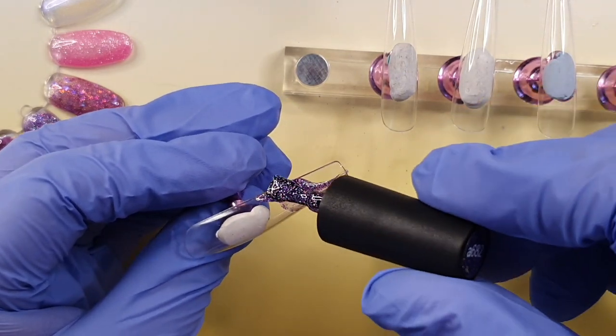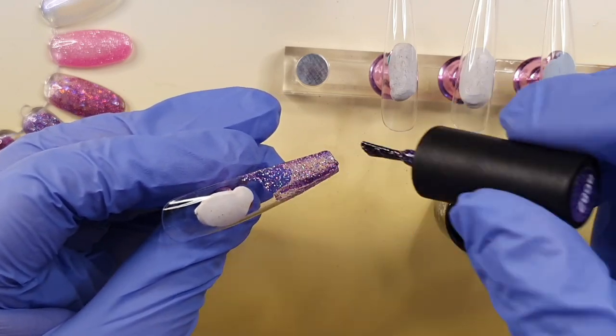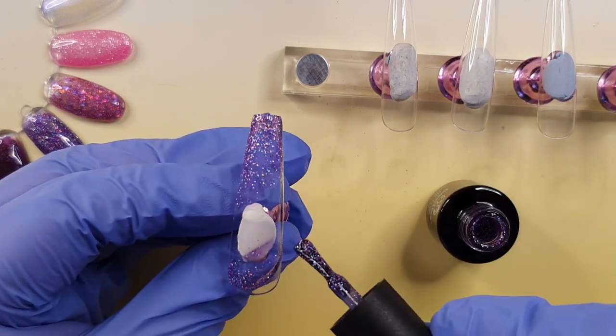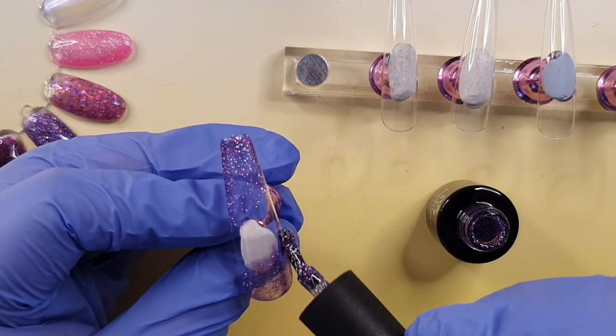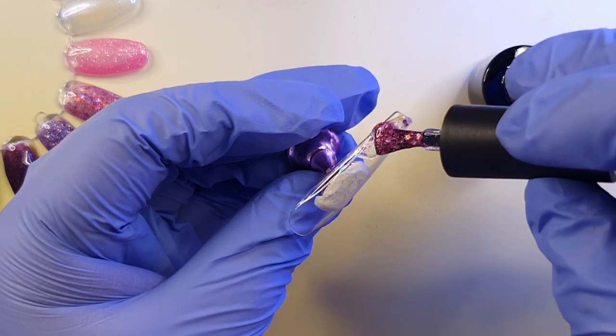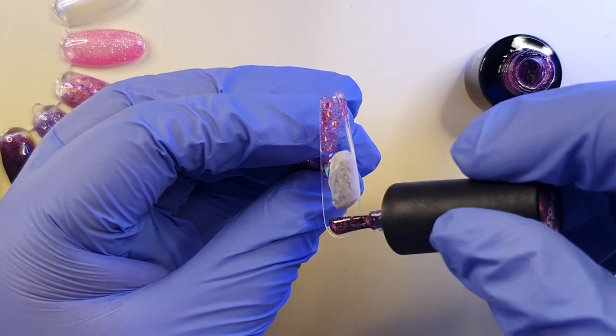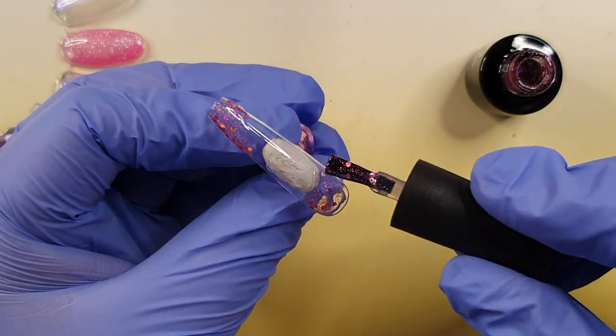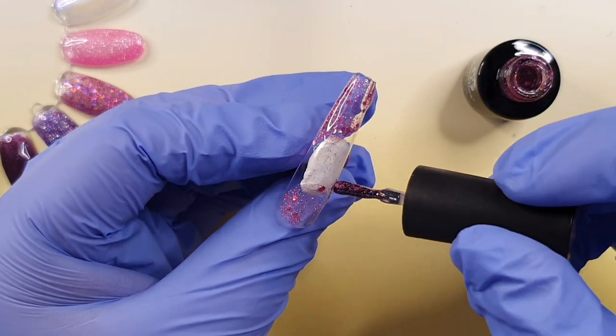Moving on to the actual set, I do one set of press-ons and then I do one with the gel X. You of course can just make press-ons and you can stick them on with glue or the glue tabs. You can even probably get away with doing the gel X method with this set as well because this glitter, it's a little bit see-through. I had to go over with two coats.